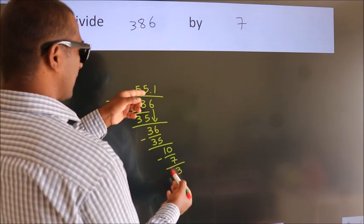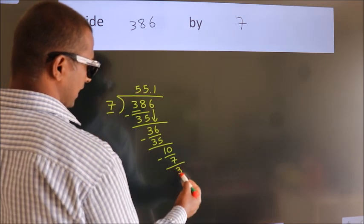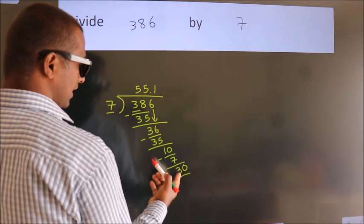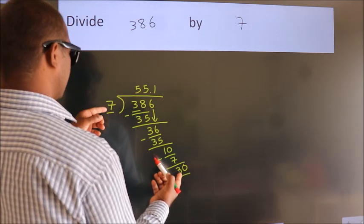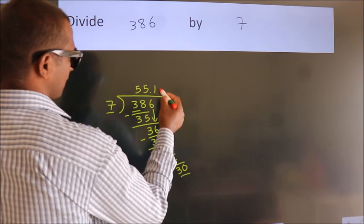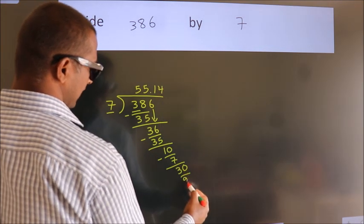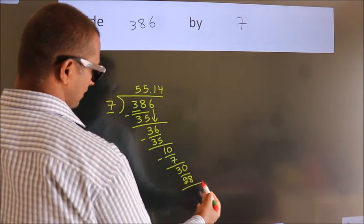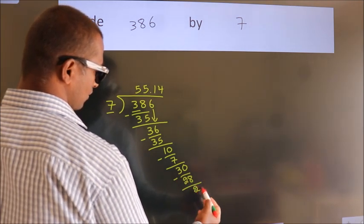After this, we already have the decimal, so directly take 0. So, 30. A number close to 30 in the 7 table is 7 fours, 28. Now we subtract and get 2.